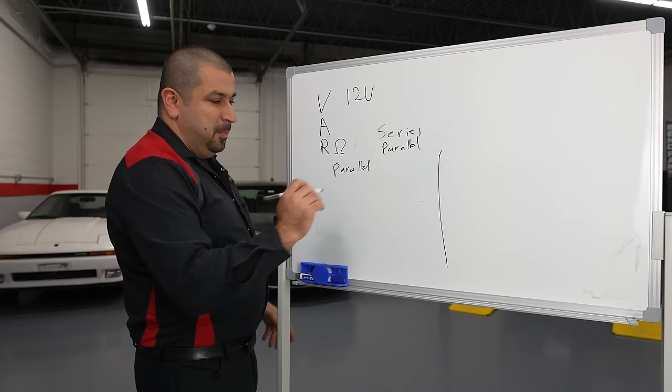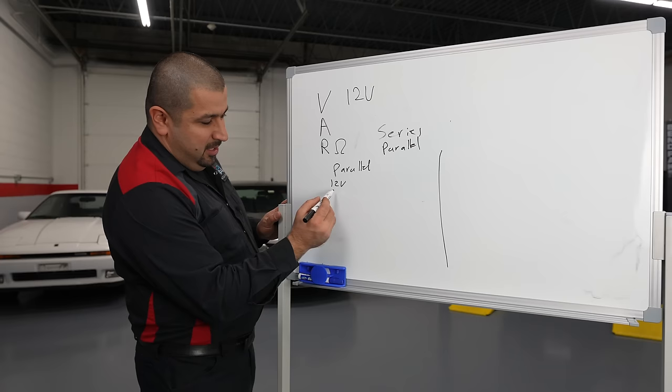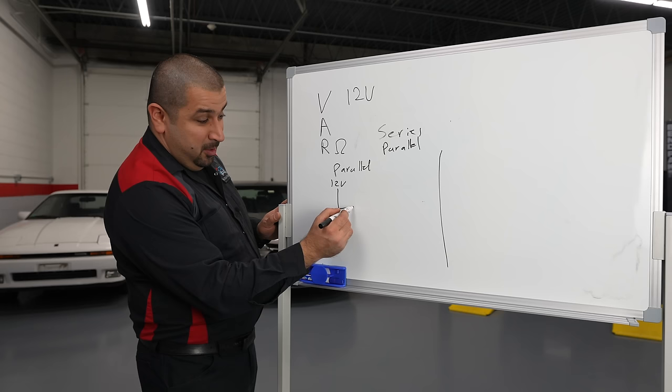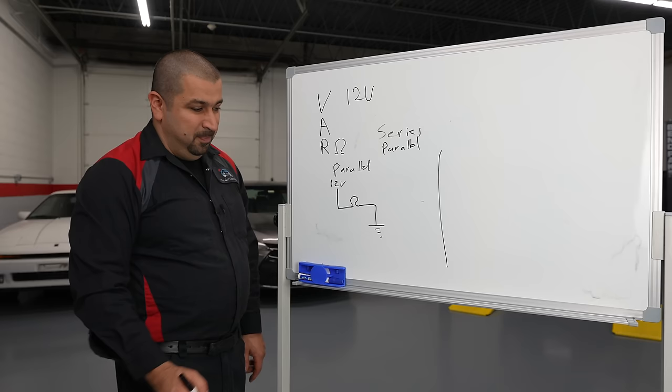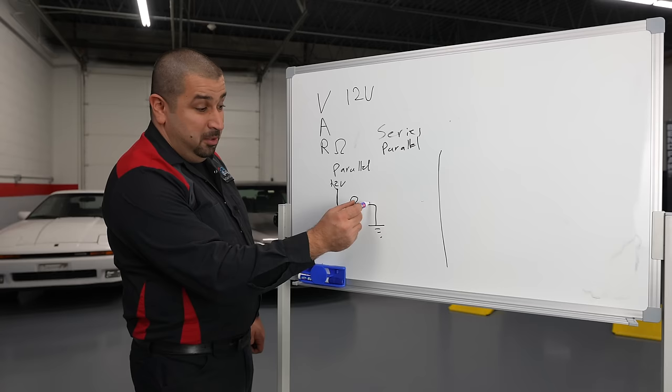The parallel circuit, very simple, extremely simple. Basically your 12 volt source, you have a wire, goes to our bulb and goes to ground. This is a parallel circuit. Basically the voltage with the amperage because now we have a path to ground is going to go here, voltage drops completely, goes to ground. Very basic circuit.